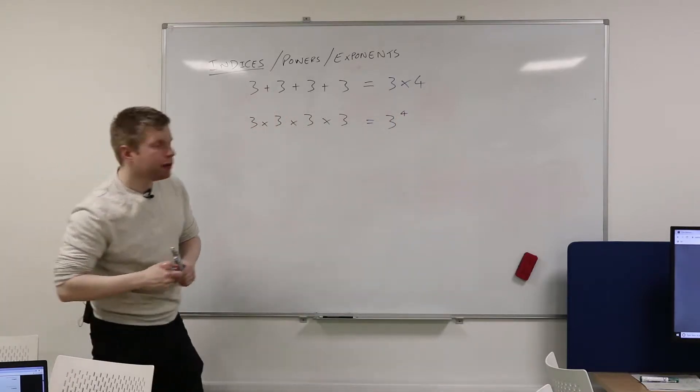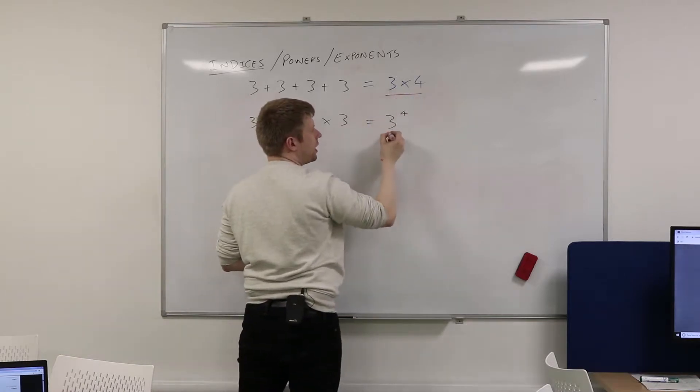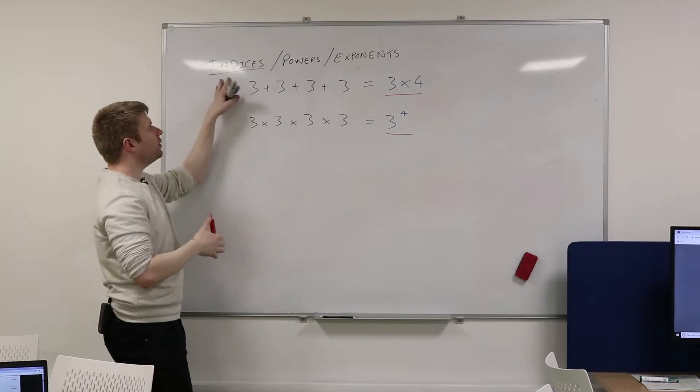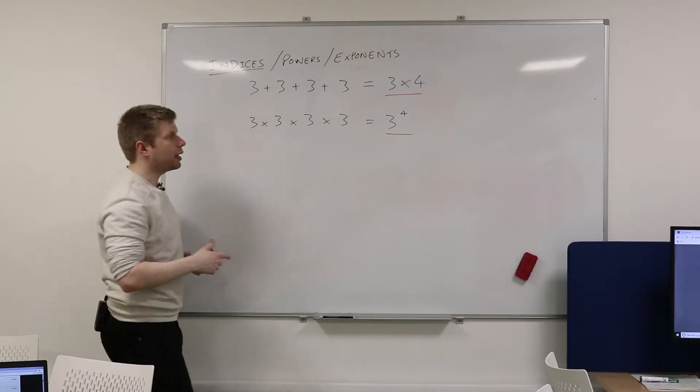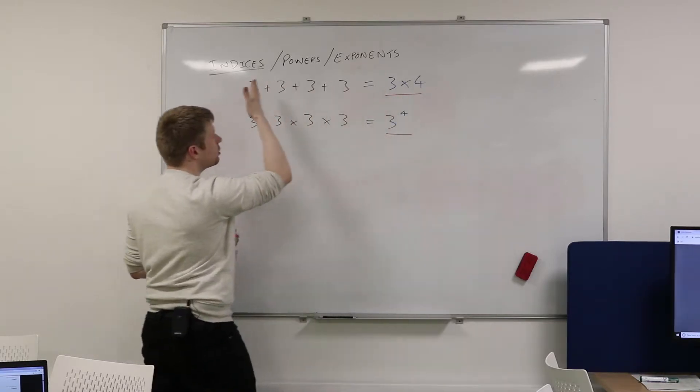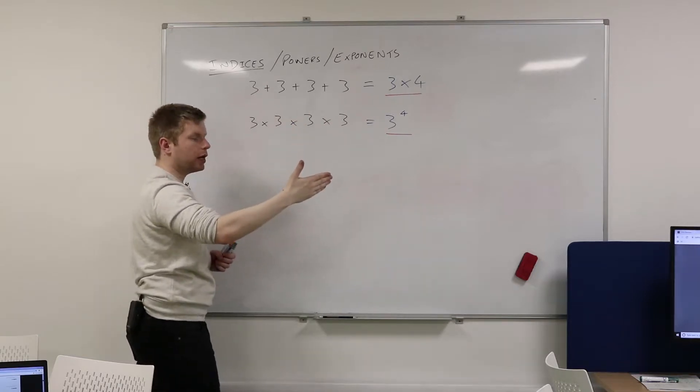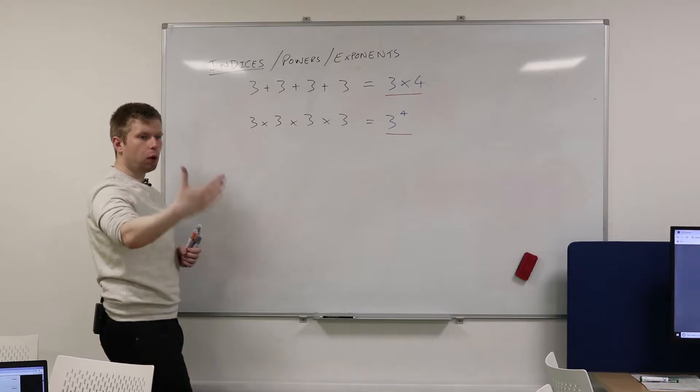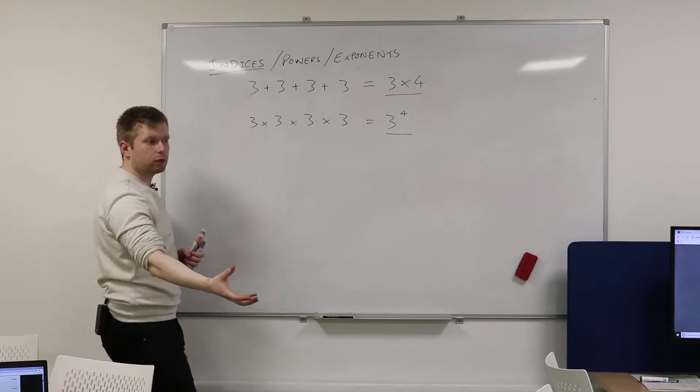So are you happy with the difference between this and this? It's the one thing which everybody gets confused with when they're dealing with indices. 3×4 means 3 added to itself 4 times. 3 to the power of 4 means 3 multiplied by itself 4 times.